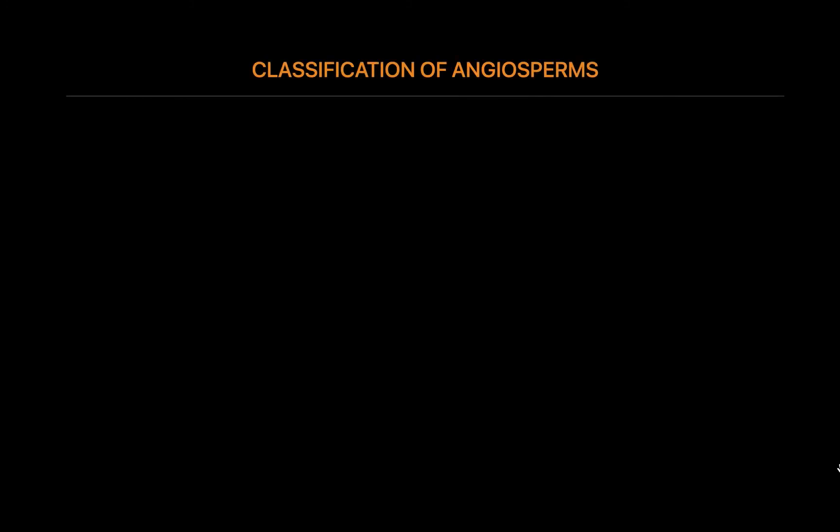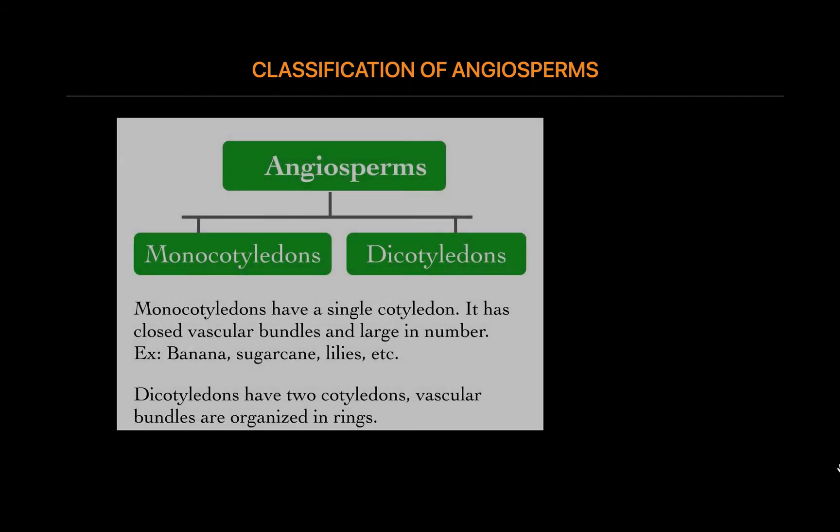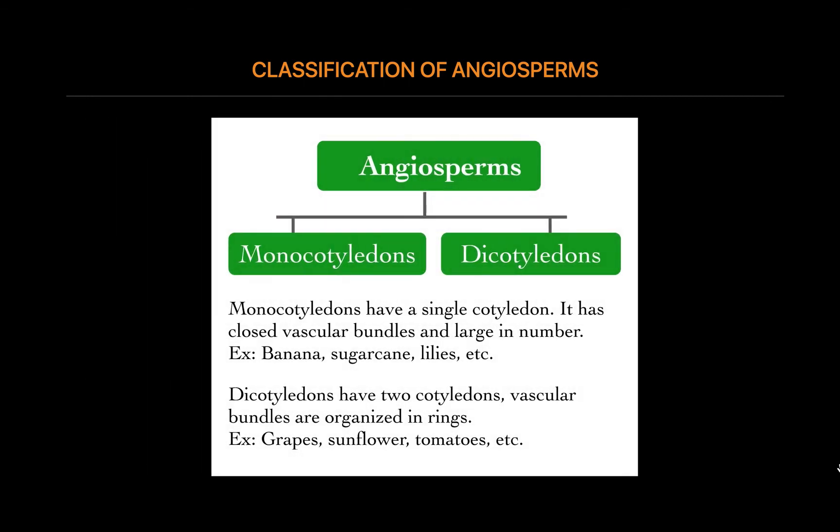Classification of Angiosperms: Angiosperms are classified into two types — monocotyledons and dicotyledons. Monocots have only one seed leaf inside the seed coat. It is often only a thin leaf because the endosperm to feed the new plant is not inside the seed leaf. Dicots have two seed leaves inside the seed coat.